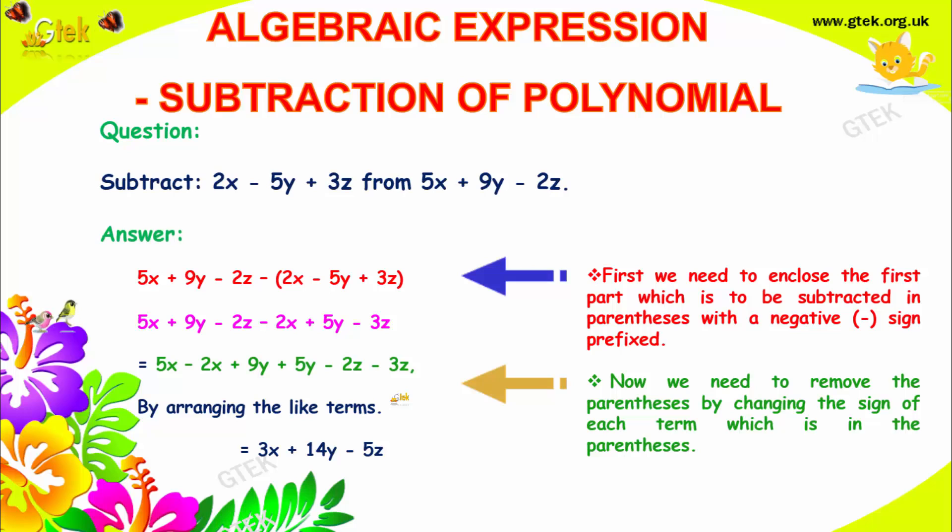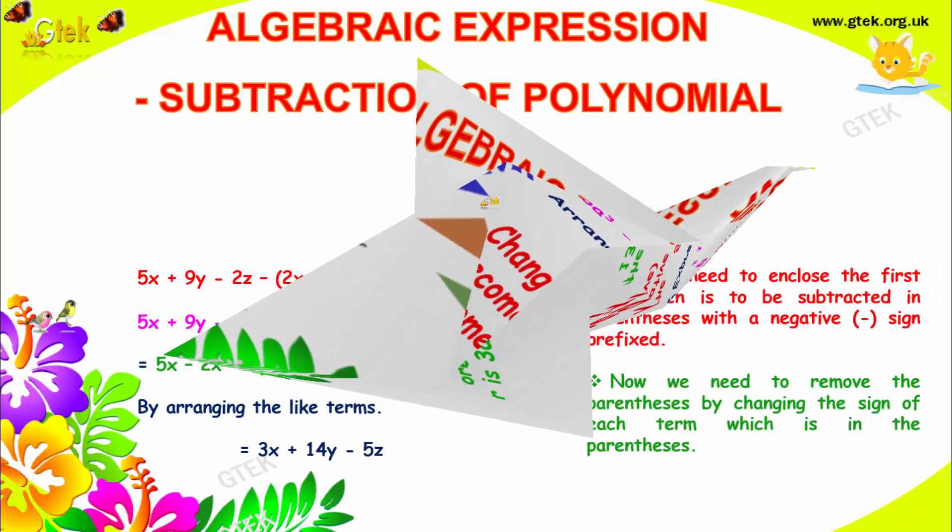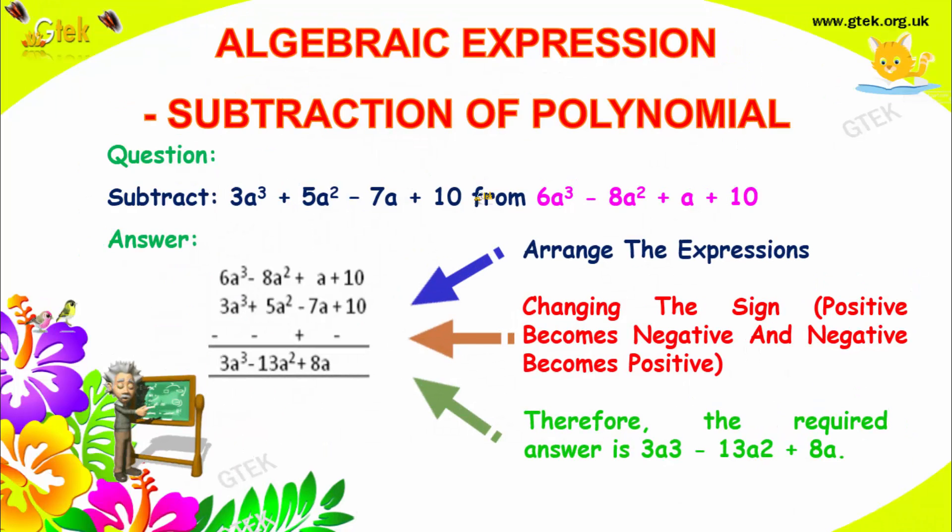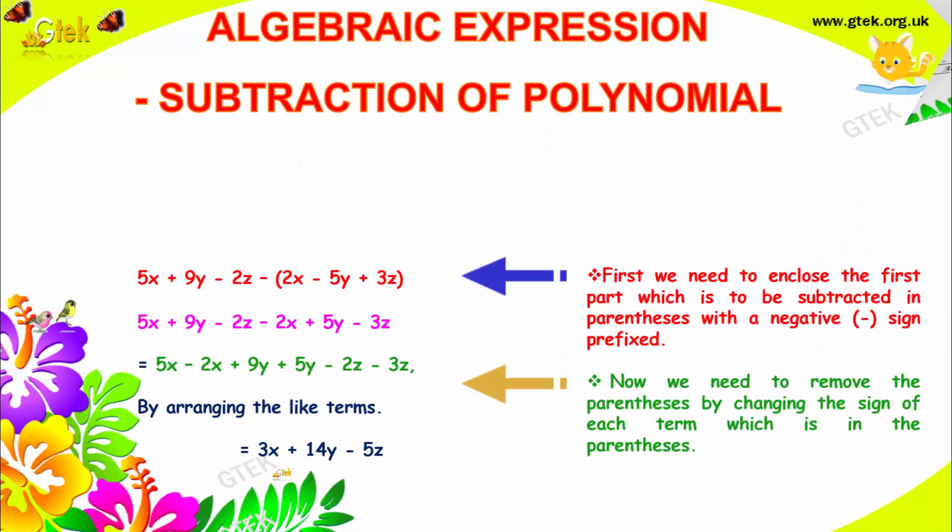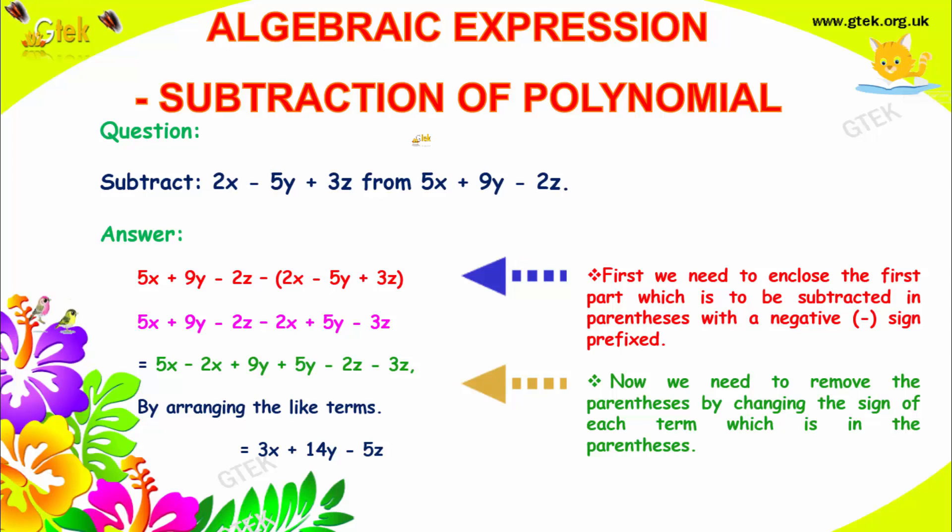We will move to the next problem. It is 2x minus 5y plus 3z, and from 5x plus 9y minus 2z. As I told before, this is the first term. From this one, you need to minus this one. So you need to count here. Minus. You should have the second term.